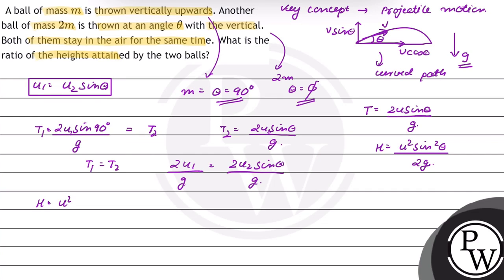For height 1, sin square 90 degree ki value is 1, so height is equal to u square by 2g, u1 square by 2g. And for particle 2, height 2 is equal to u2 ka whole square sin square theta by 2g.